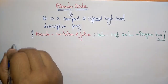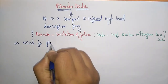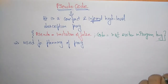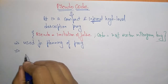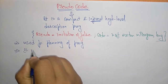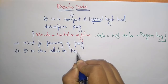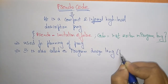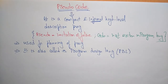Pseudocode is used for planning of a program. To plan any program, if you want to write any program, it is better you write it first in pseudocode. It is used for planning of a program. Pseudocode is also called program design language, PDL.